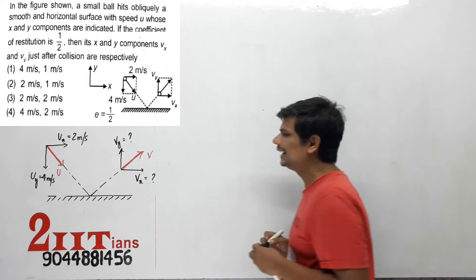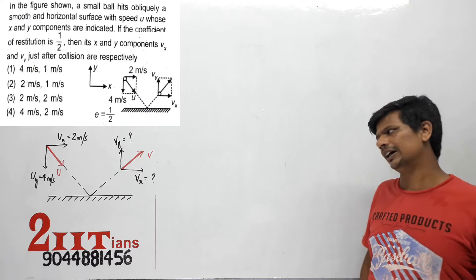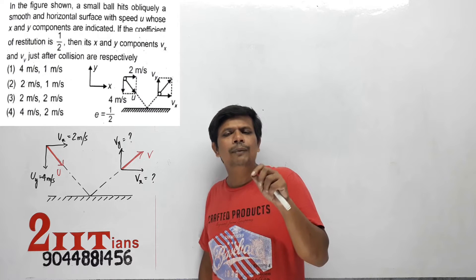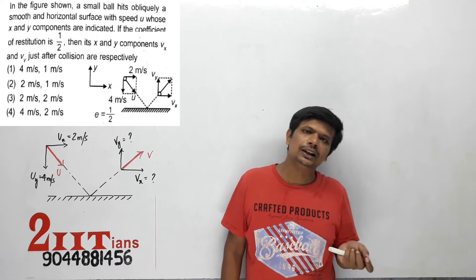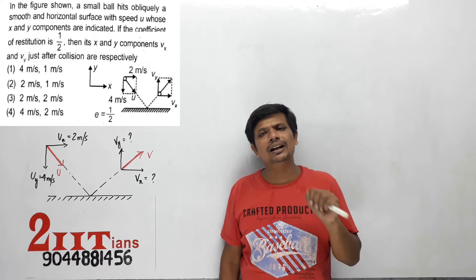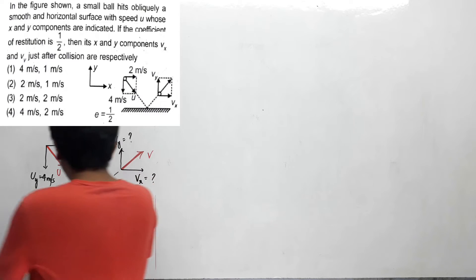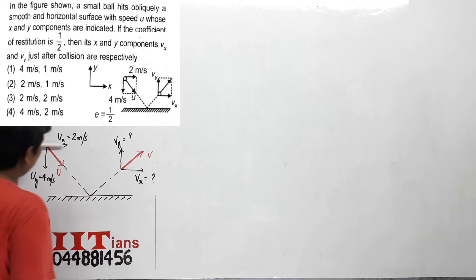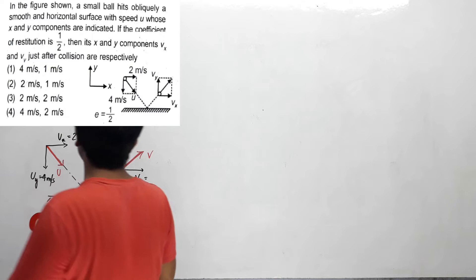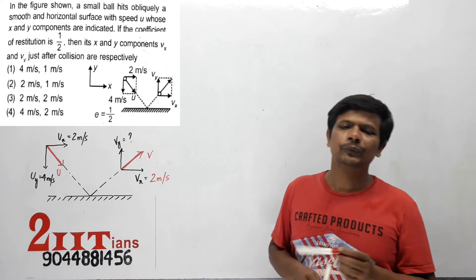Is question mein aapko yehi logic samajhna hoga aur jo bhi aage ke questions mein kaam aayega ki jab bhi collision hota hai, toh surface ke perpendicular direction mein change in velocity hota hai. Surface ke parallel direction mein change in velocity nahi hota hai. Surface yeh hai aur surface ke parallel direction kya hai? ux. Toh yeh bhi vx bhi apna kya ho jayega? 2 meter per second.